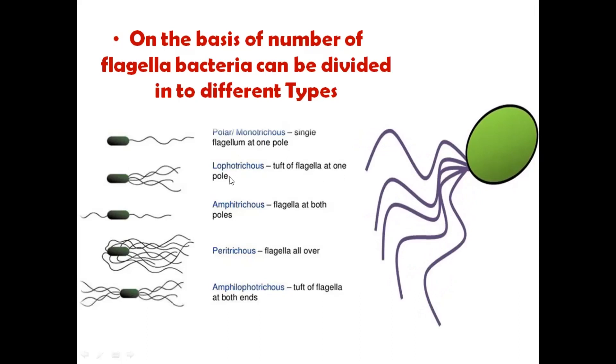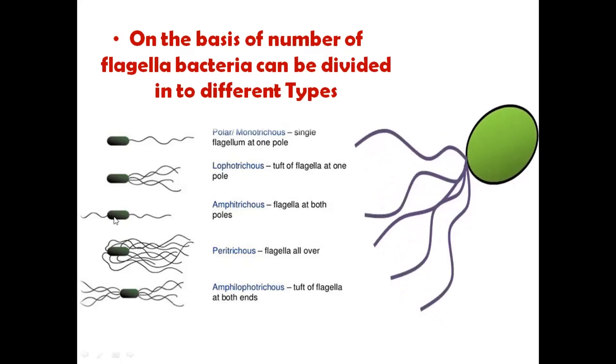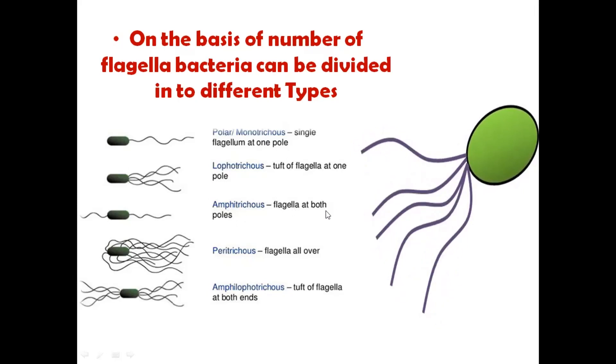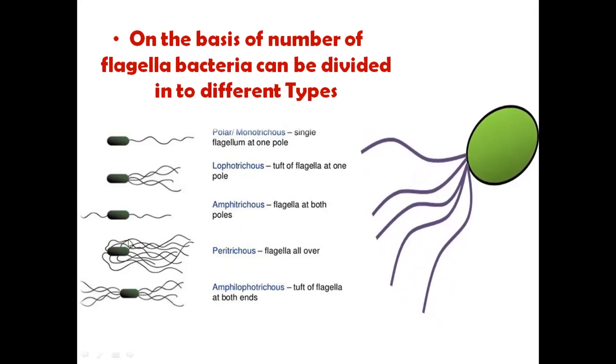A tuft of flagellum at one pole, which we call lophotrichous. If there is a single flagellum on one pole and one single flagellum on the other pole, this has flagellum at both poles, which is amphitrichous.